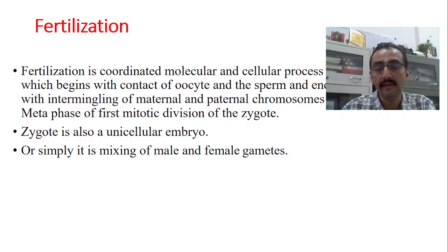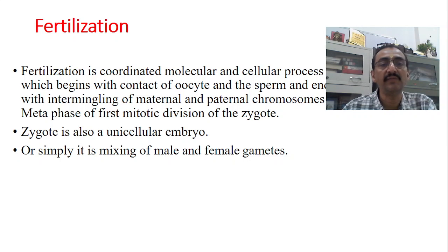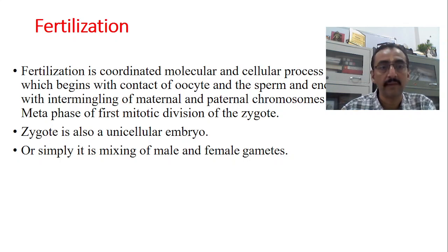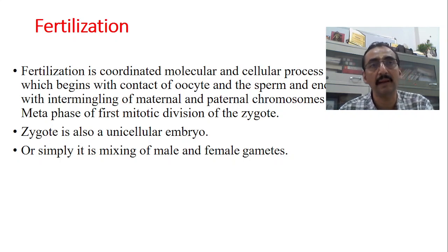Once the genetic material of the sperm and the genetic material of the oocyte come together and intermingle, and then they start their action — at that point it is in the metaphase and is called the zygote. The zygote is nothing but a unicellular embryo — a single cell. It contains 23 chromosomes from the paternal side and 23 chromosomes from the maternal side, giving 23 pairs in total. Simply put, fertilization is the mixing of the male and female gametes.